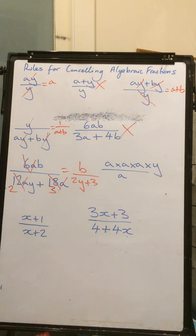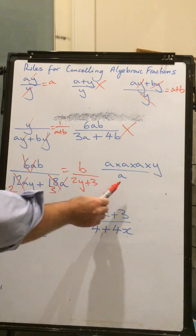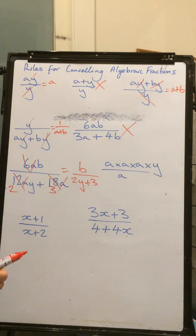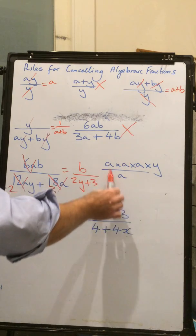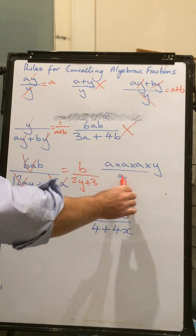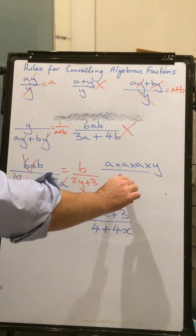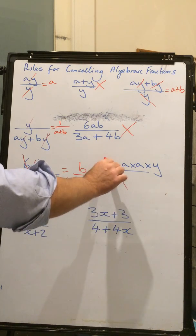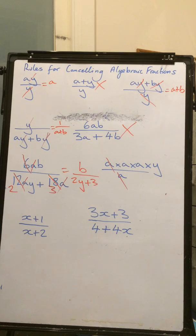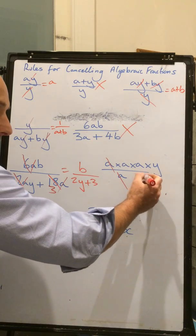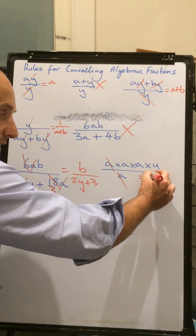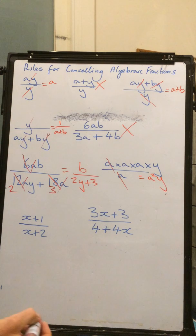Okay. Now, can this a cancel out all those a's there? No, because this is a different question. This is a different type of question. In this case, we're multiplying all the a's across. So, here, that a can only cancel out that a there. So, this answer here is going to give us a squared y, or a times a times y.